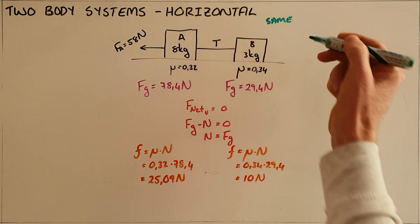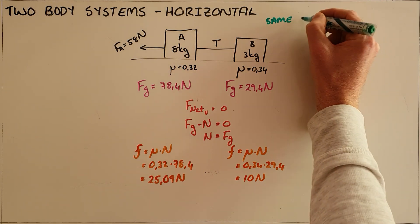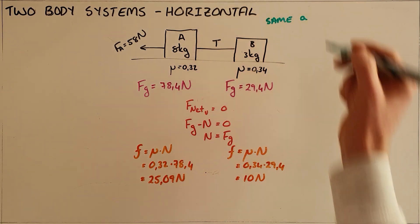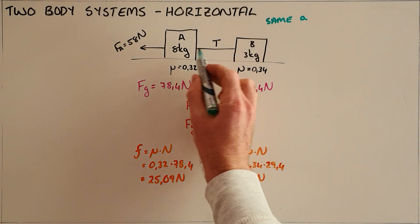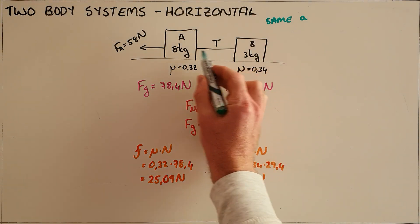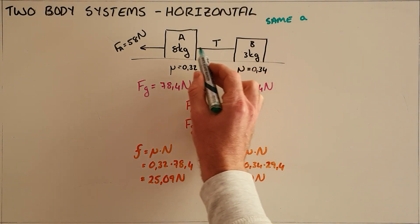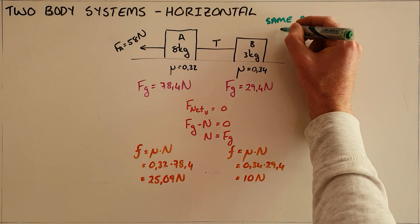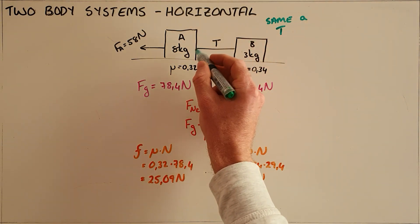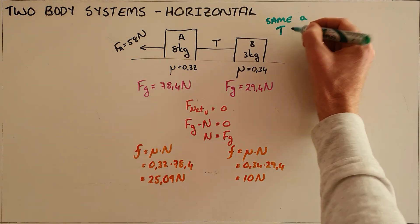Because they are linked together, the acceleration of one object will always be the acceleration of both objects. Secondly, it's important to realize that there is a single rope, which means that the tension that one object